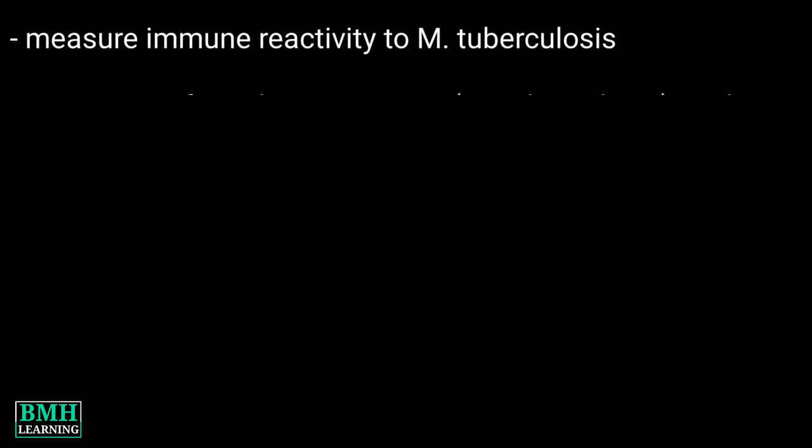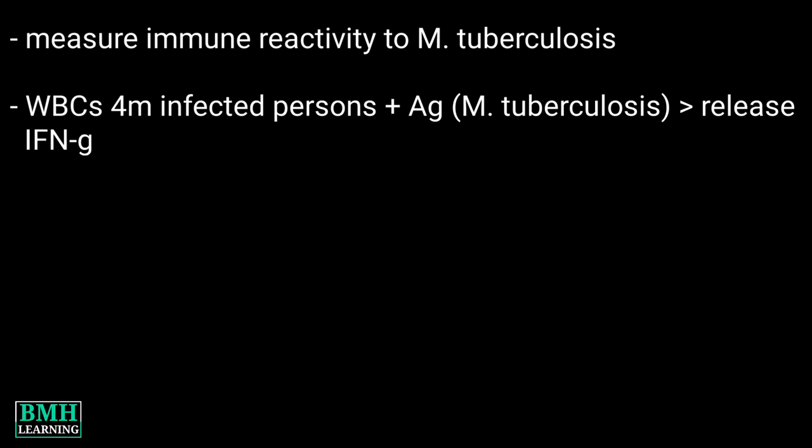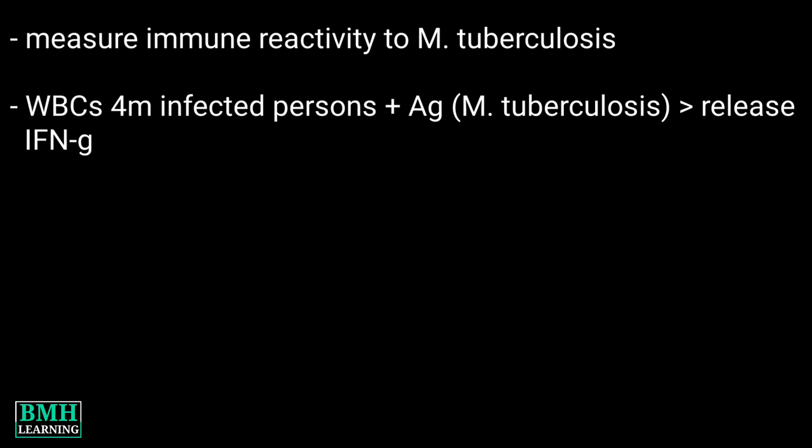How do these assays work? Basically, IGRAs measure a person's immune reactivity to M. tuberculosis. White blood cells from most persons that have been infected with M. tuberculosis will release interferon gamma when mixed with antigens derived from M. tuberculosis. The antigens, testing methods, and interpretation criteria for IGRAs differ.